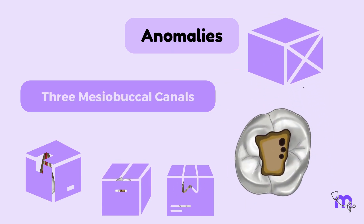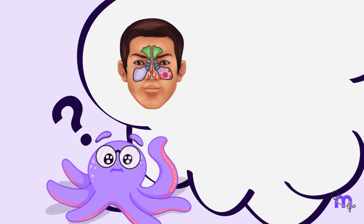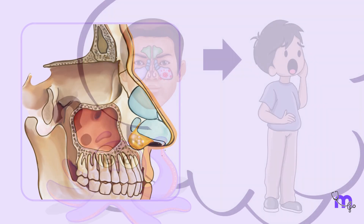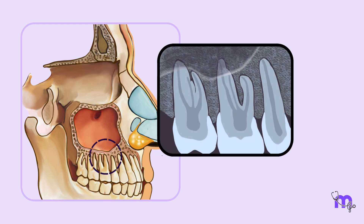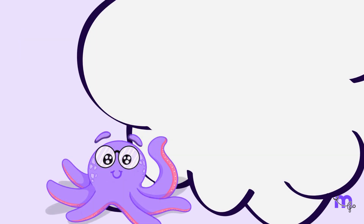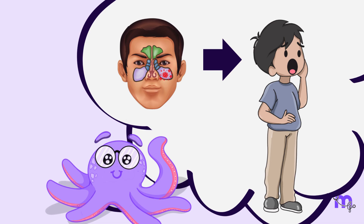Have you wondered why sometimes patients with sinusitis also complain of pain in a non-carious upper molar? As the maxillary first molar lies close to the maxillary sinus, the fundus of the alveolar socket may protrude into the sinus, producing a bony prominence in the sinus floor. In such cases, the periodontal ligament and mucoperiosteal lining separate the root from the sinus. This is one of the reasons why maxillary sinusitis can cause pain in the maxillary molar region.